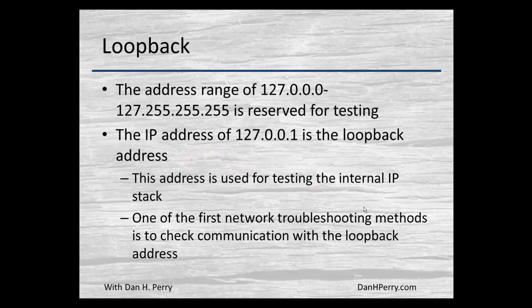The loopback range is actually a class A sized network going from 127.0.0.0 to 127.255.255.255, and it's reserved for testing. There's really only one IP address in this range that's ever used, and that's called the loopback address: 127.0.0.1. It's used to test your internal network communications on your TCP/IP stack, and it's one of the first things you should do when troubleshooting.